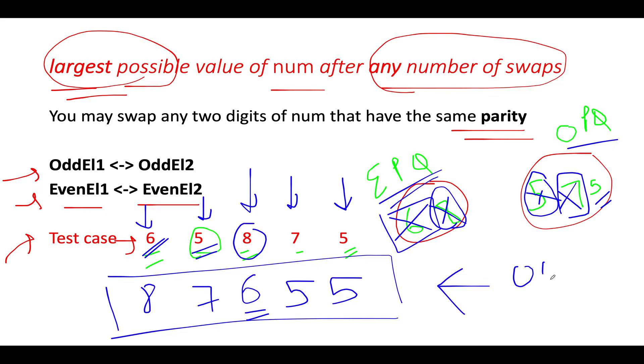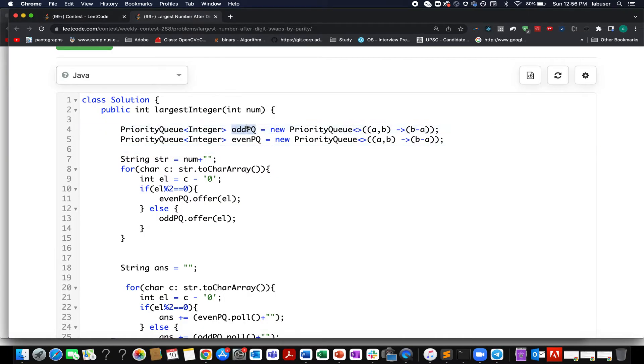I'll exactly follow the same steps in the coding section. The time complexity of this approach is order of n log n, where n signifies the number of digits that are present in my input string. The space complexity is of order of n, where n signifies the number of elements that are present in my input string. Let's quickly walk through the coding section.